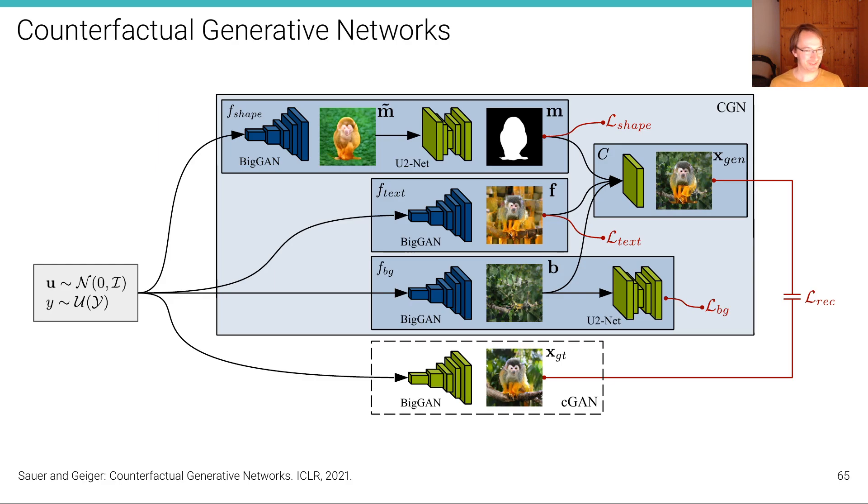In general, we are interested in disentanglement, which is an important research area at the moment. Given just a collection of images, we're trying to disentangle the underlying factors. In this case, we're interested in causal factors—factors that were responsible for generating the shape of an object, the texture of an object, or the background information.